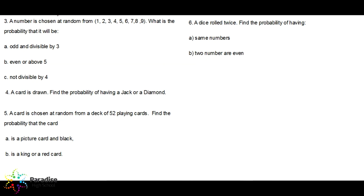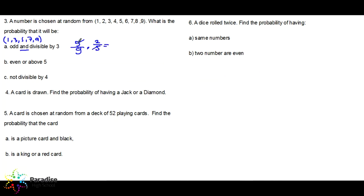Let's continue to look at the other questions. A number is chosen at random from nine numbers — what is the probability that it will be odd AND divisible by three? First we check: only one event is taking place. I will look at the probability of having an odd number. Odd numbers out of these nine are one, three, five, seven, and nine — that's five numbers, so probability is five over nine. Out of those five, how many are divisible by three? Two numbers: three and nine. So the probability is two over five, giving a final answer of two over nine.